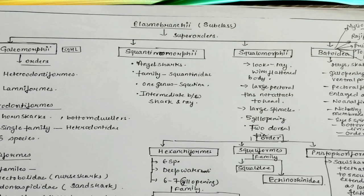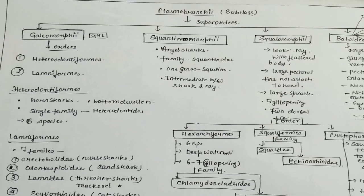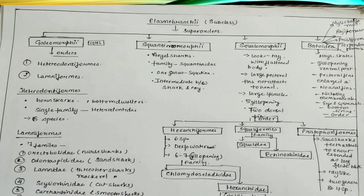The orders under Batoidea are Myliobatiformes, Rajiformes, Pristiformes, and Torpediniformes. These are the orders of Batoidea. So this was the classification of subclass Elasmobranchii till family level. We will further continue for the Osteichthyes, that is bony fishes.